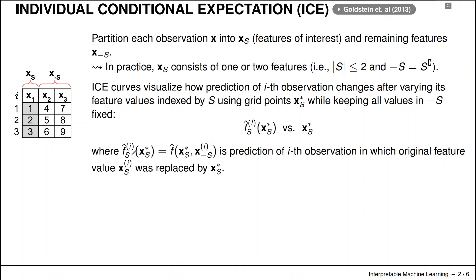There's just a little bit more notation. We now create our ICE curve function: we have f̂ for our feature of interest x_S and we use a certain observation x*.